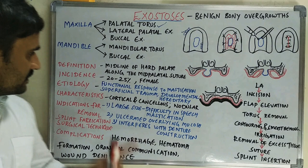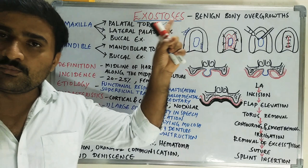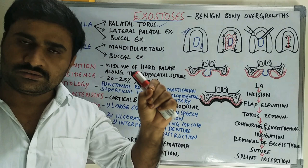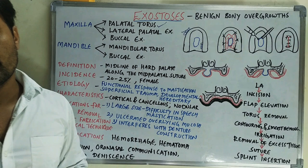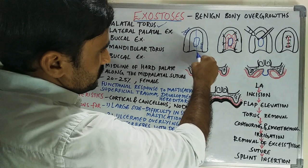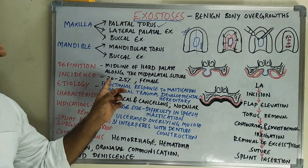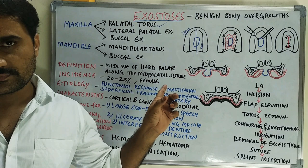For palatal torus, the definition is: it is a benign bony overgrowth found along the midline of the hard palate, that is along the mid-palatal suture. The incidence is almost 20 to 25 percent, and it is more common in females.